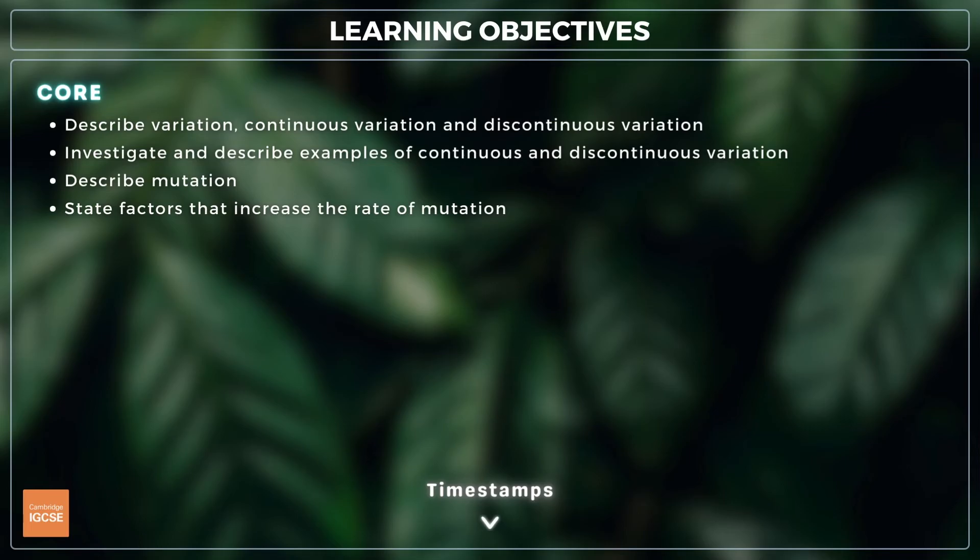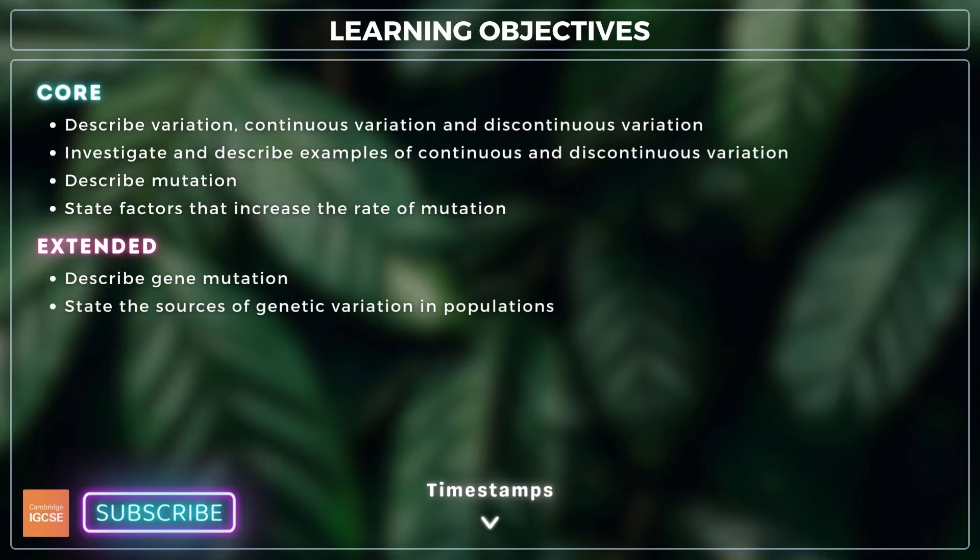For topic 18.1, you need to describe the terms variation, continuous variation, and discontinuous variation, investigate and describe examples of continuous and discontinuous variation, describe mutation, and identify factors that increase rate of mutation. For extended, you also need to describe the term gene mutation and state sources of genetic variation in populations.